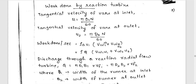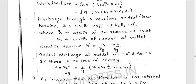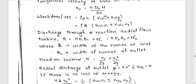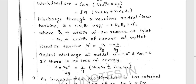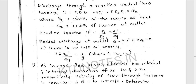D1 is the diameter at the inlet. Work done per second equals Rho Q into (Vw1 U1 plus Vw2 U2). The discharge Q equals Pi D1 B1 Vf1, which also equals Pi D2 B2 Vf2. B1 is the width of the runner at the inlet, B2 is the width at the outlet.